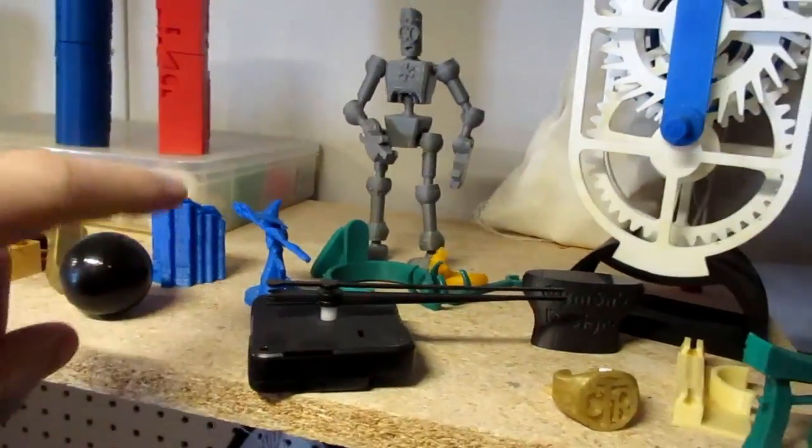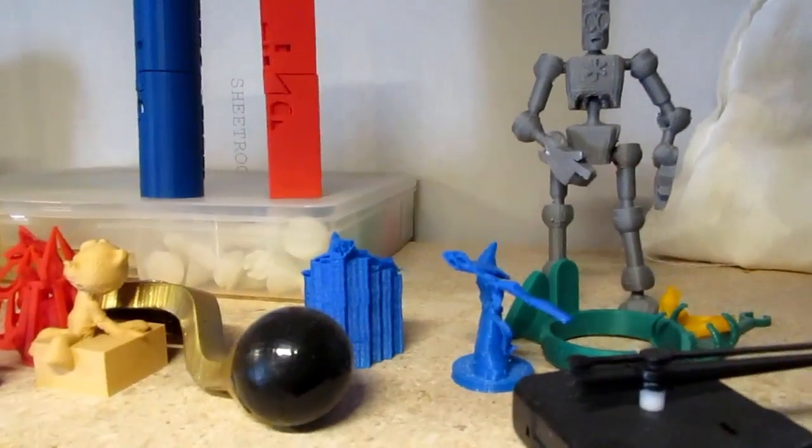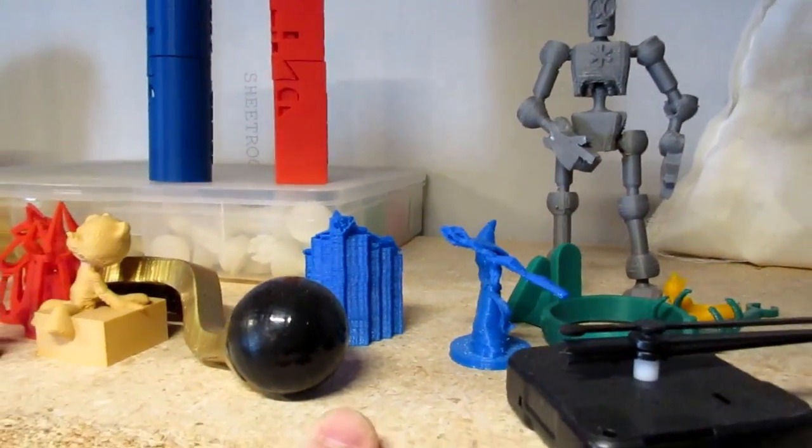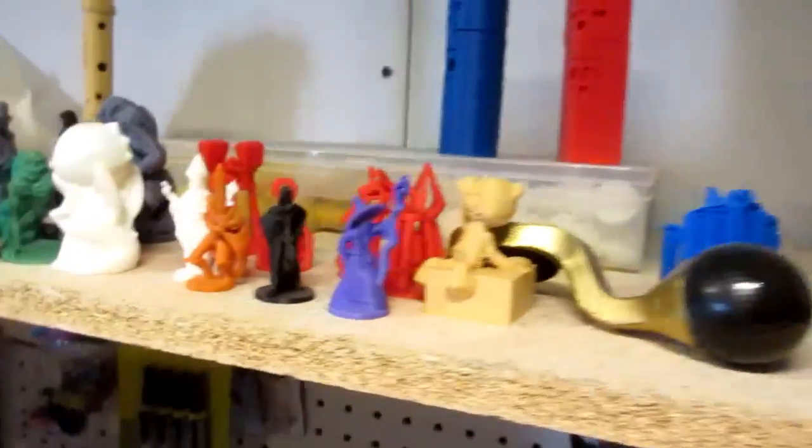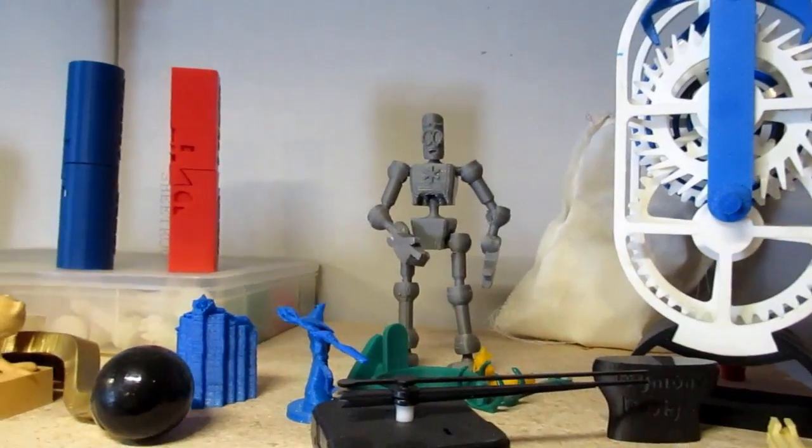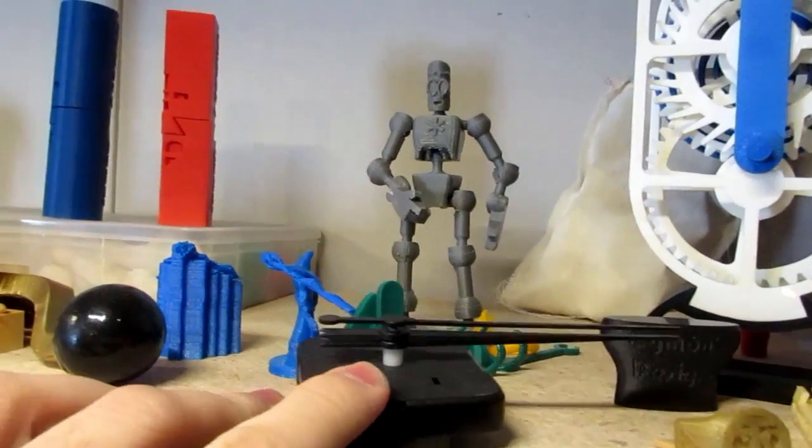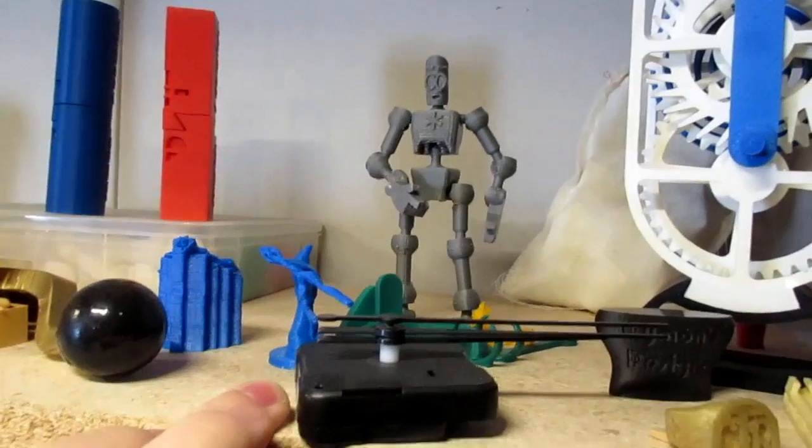There's my example of supports versus what it looks like when you remove the supports and why they look so crappy and why you should design for not having supports. That's a robot that I designed, and you can get it on Thingiverse. This is a clock that I'm planning on turning into a geared clock.